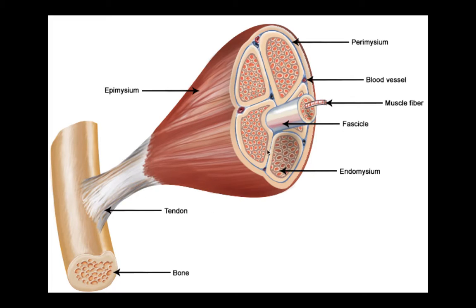Focusing on skeletal muscles: we have the biceps here, and the tendon connecting the bone and the muscle. There's no strict demarcation between the tendon and the covering around the muscle. That covering is called the epimysium — it's connective tissue that covers the muscle, protects it, and reduces friction between the muscle and surrounding bone and other tissues.